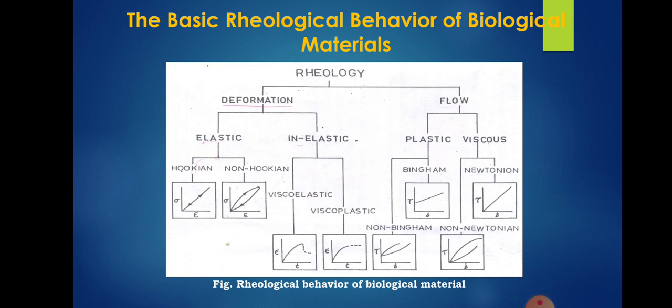Like the deformation, flow is also categorized into plastic flow and viscous flow. Plastic flow are again categorized as Bingham plastic flow and non-Bingham plastic flow. And the behavior of the material under the applied load is shown by the graphs. Viscous flow are of two types: Newtonian, in which it follows a path in a straight line, that is the relation between stress to strain is linear. And non-Newtonian liquid, the graph of which is shown in the diagram. This is about the basic rheological behavior of biological materials.